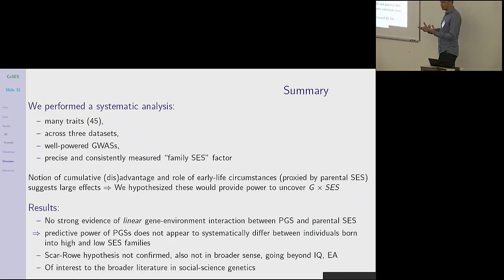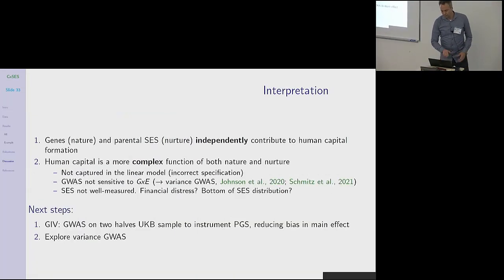So what does this mean? Well, the main conclusion is that the predictive power of polygenic scores in our analysis does not appear to systematically differ between individuals born into high and low socioeconomic status families. And so the Scarr-Rowe hypothesis is not confirmed. And I mean with this in a more general way, going beyond IQ and educational attainment. So the interpretation then would be that genes, nature, and parental socioeconomic status independently contribute to human capital formation. Or it could be that human capital is a more complex function of both nature and nurture that is simply not captured in our linear model.